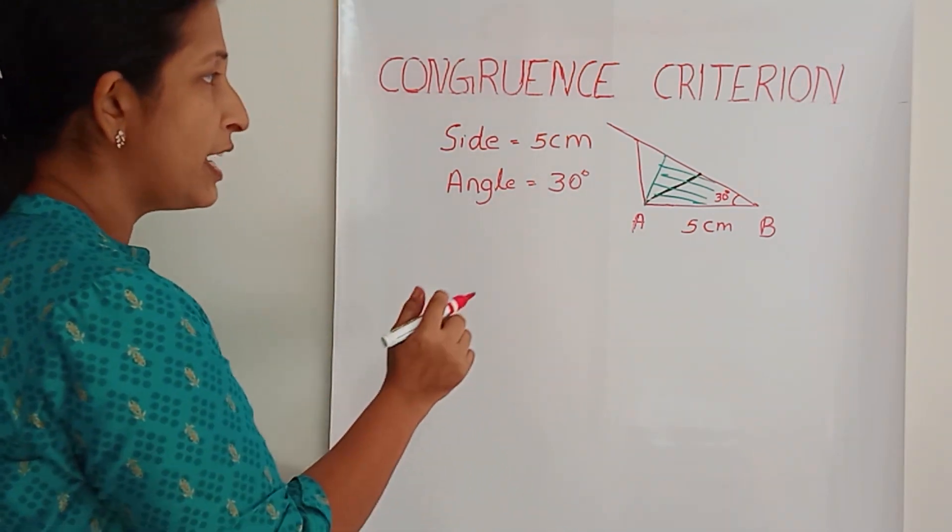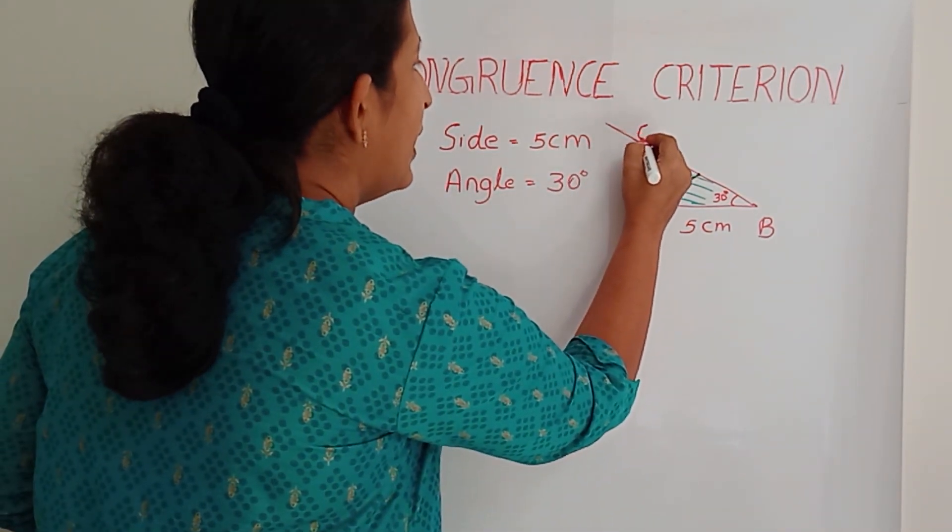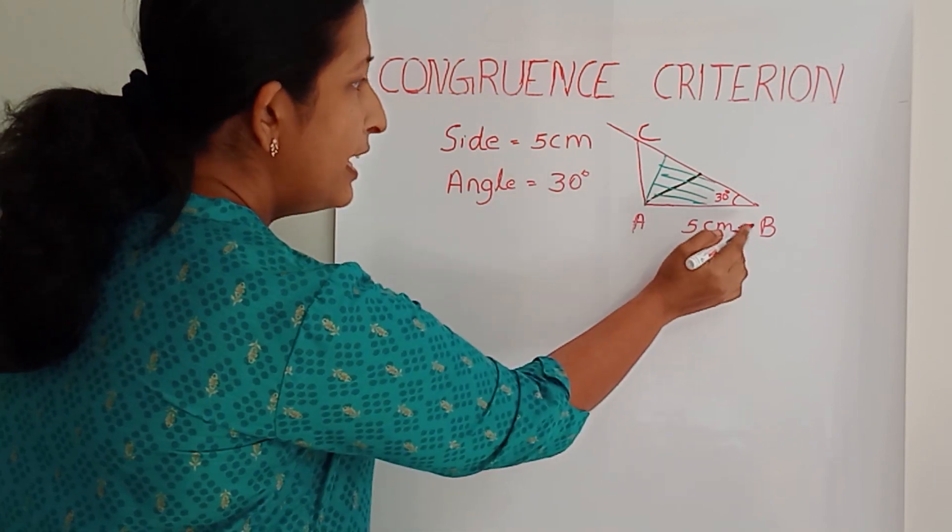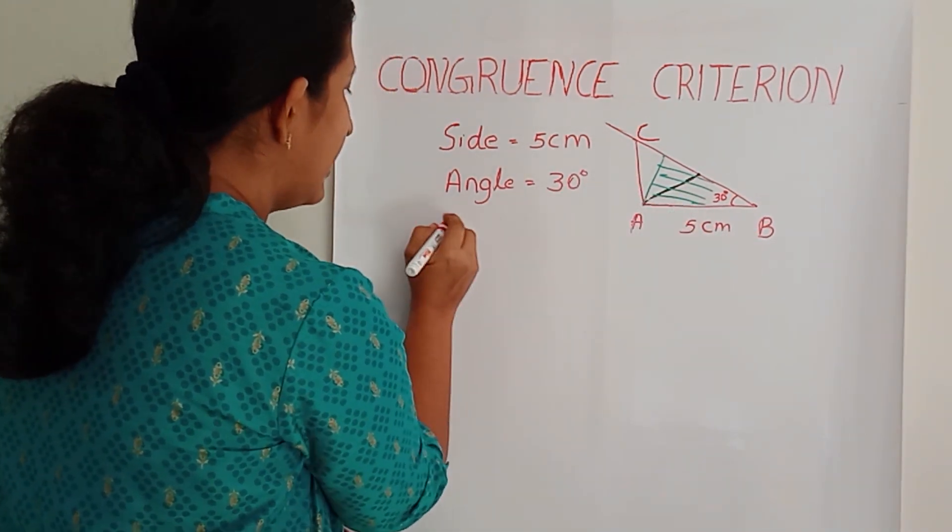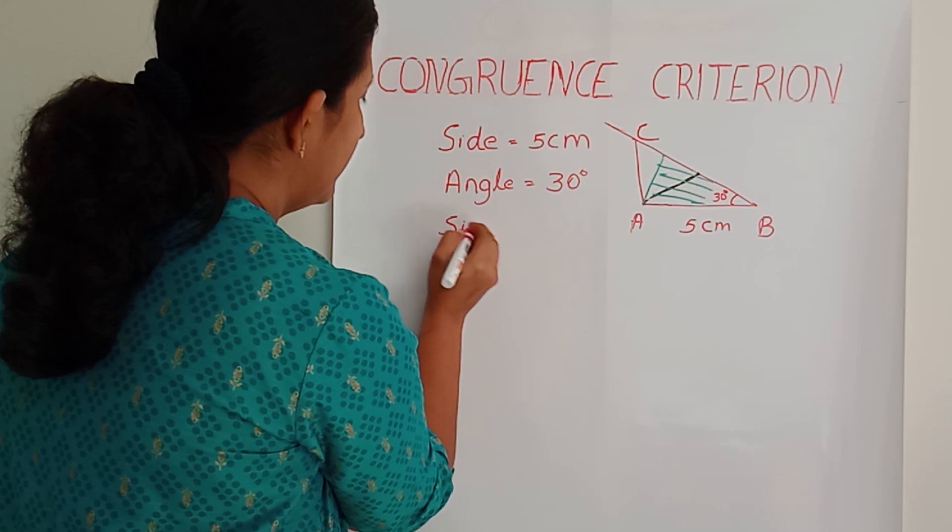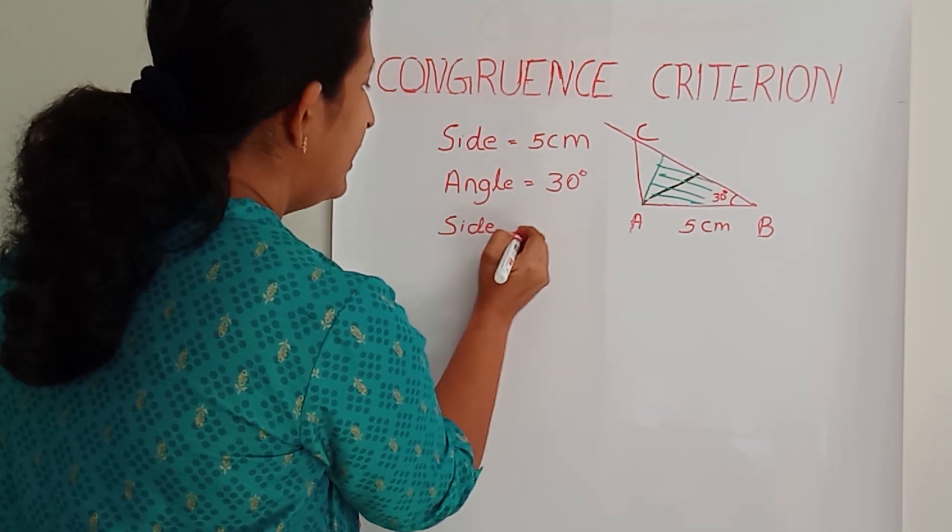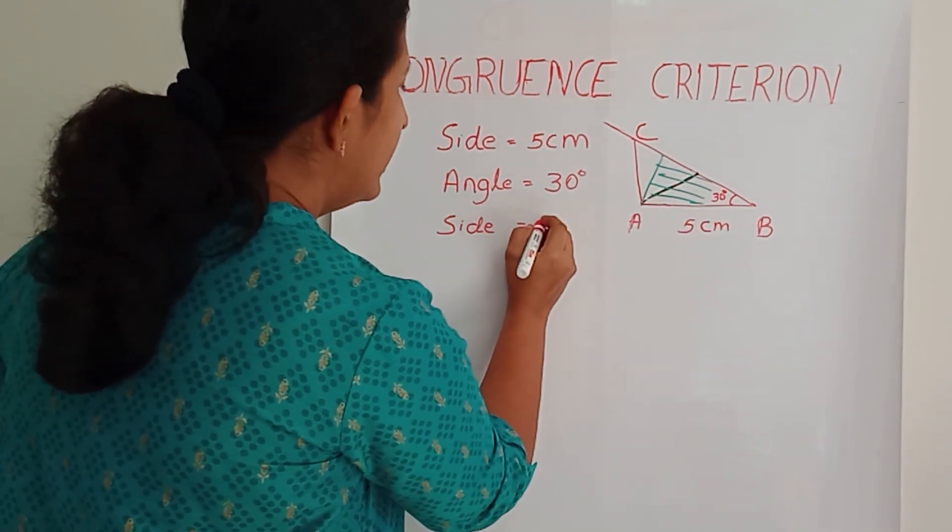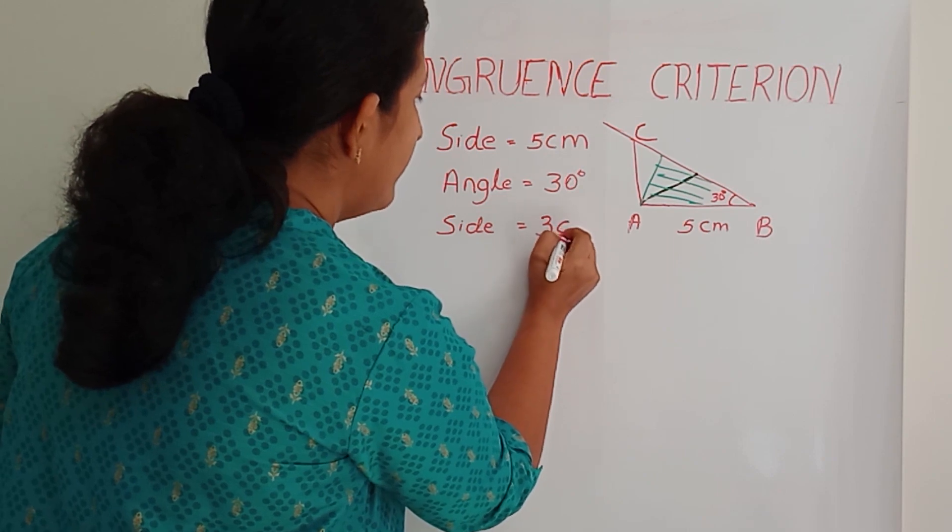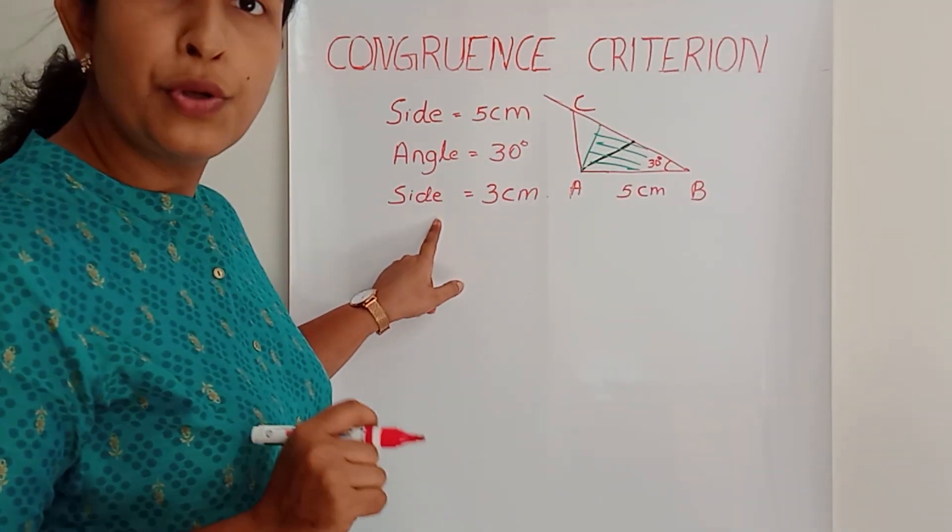That is, one more side. If you are marking this as C, he gave one more side BC, side equal to 3 cm. So Anna is ready to draw the triangle.